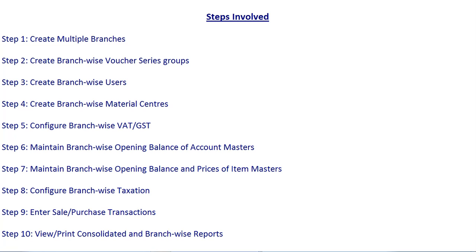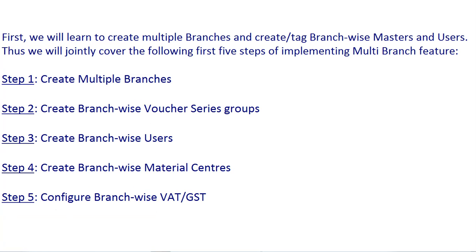Step 6 & 7 — Maintain Branch-Wise Opening Balance of Account Master and Opening Balance and Prices of Item Master; Step 8 — Configure Branch-Wise Taxation; Step 9 — Enter Various Transactions from the branch; Step 10 — View and Print Consolidated or Branch-Wise Reports.